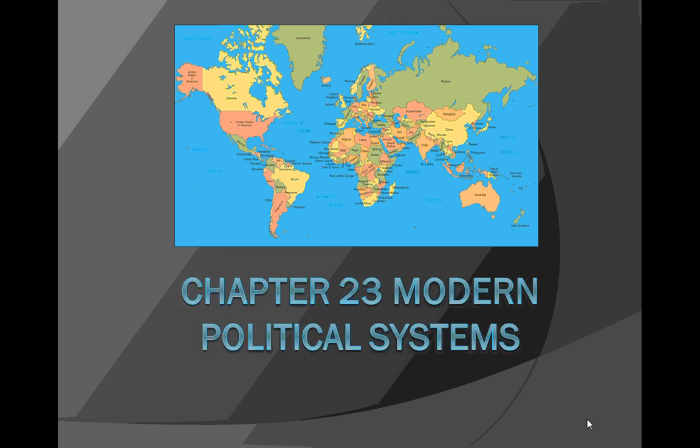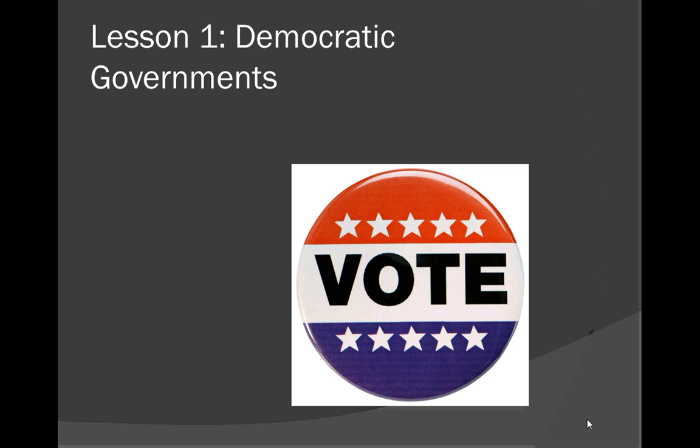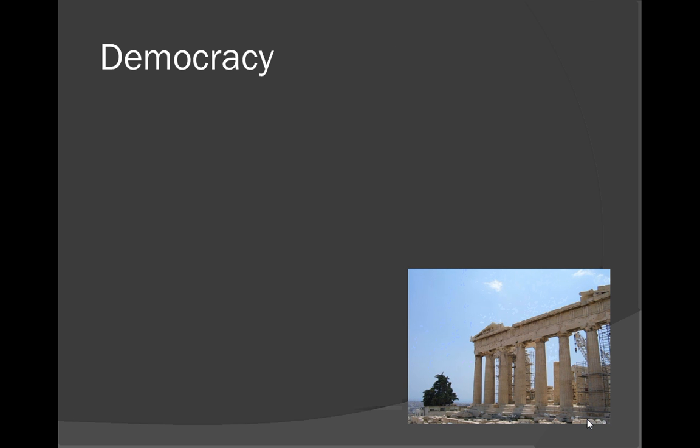Lesson 1 in Chapter 23 is called Democratic Governments. The first thing we're going to discuss is: what is a democracy? Many of you hopefully recognize this word, as it is the form of government in our own nation, and something we discussed heavily in Civics. Try to recall the definition. Democracy means the government is ruled by the people.